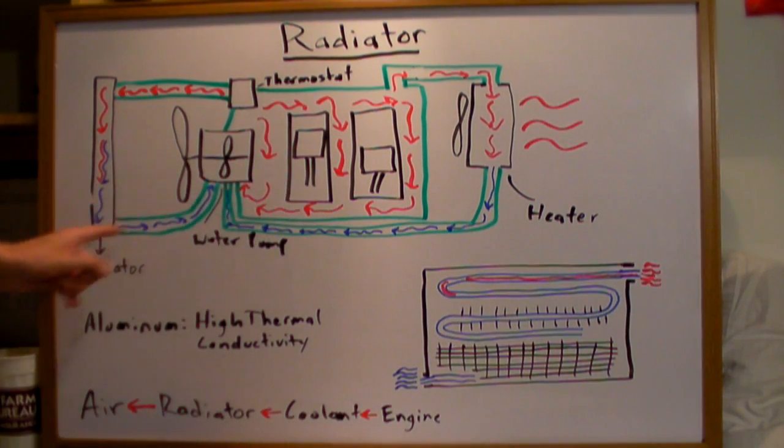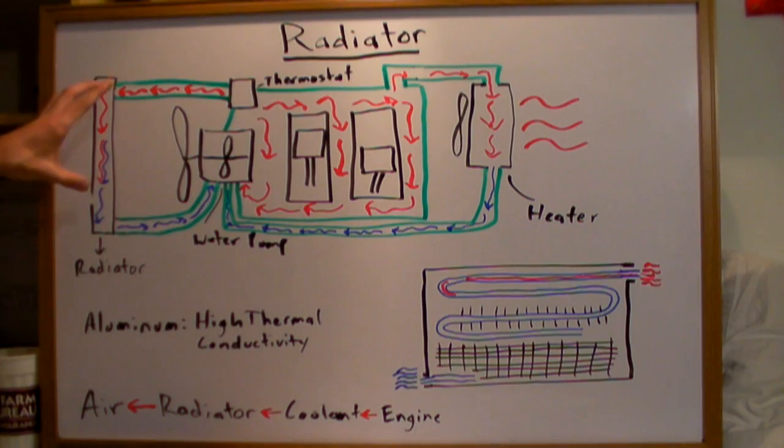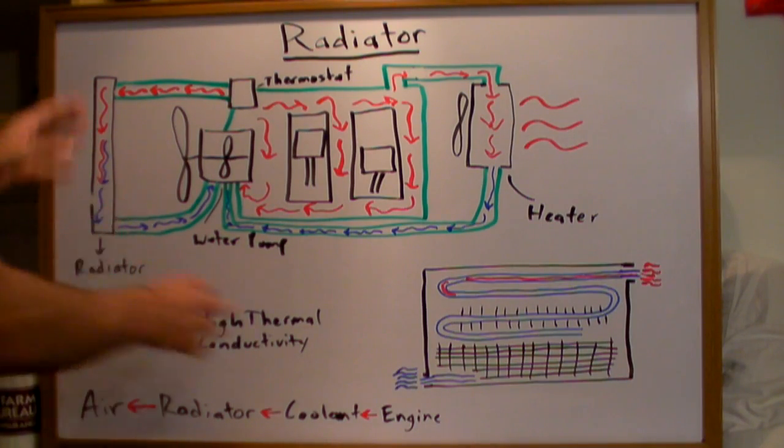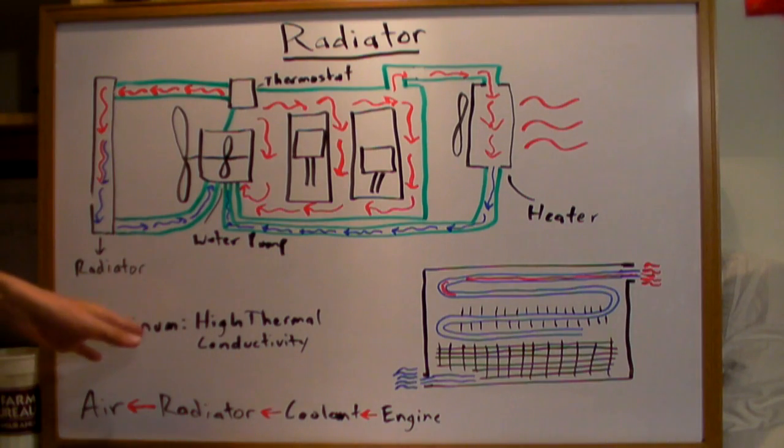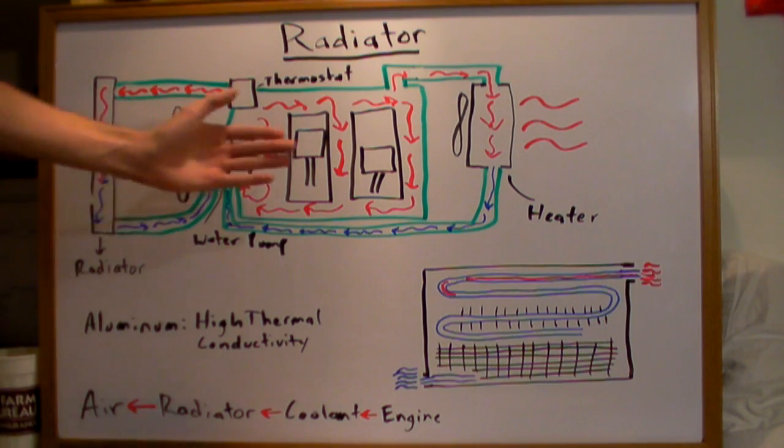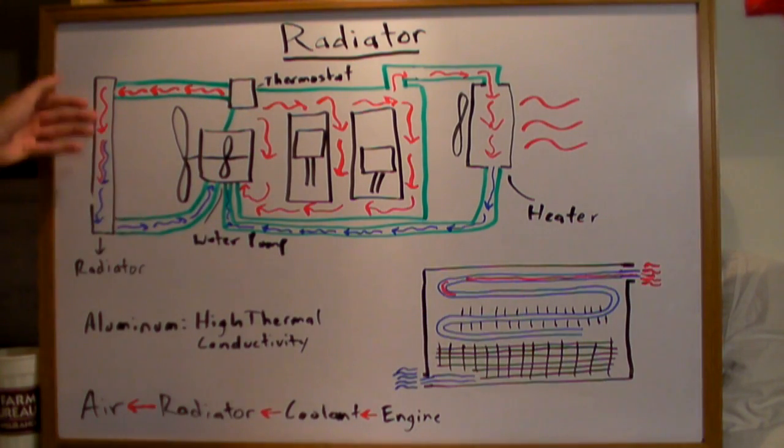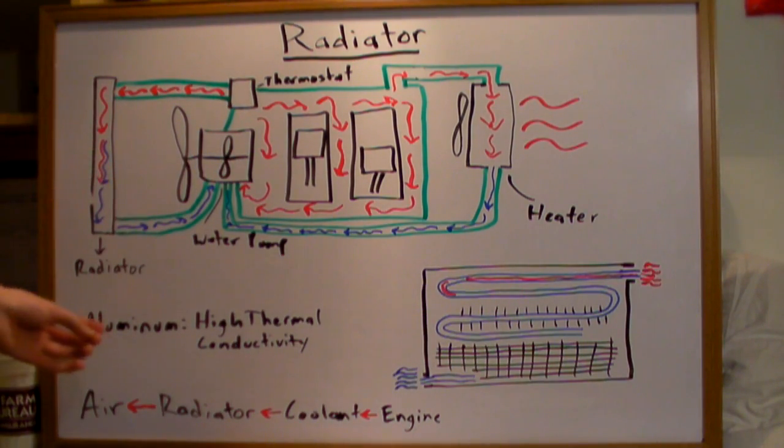Then your coolant is going to pass through the radiator and it's going to give off heat to the aluminum. And since aluminum has a high thermal conductivity, it takes the heat very quickly. Now that heat is then passed to the air. As you're driving, you've got air flowing across these coils and it's going to cool down your radiator, so it's going to cool down the coolant that's going into it, therefore cooling down your engine.